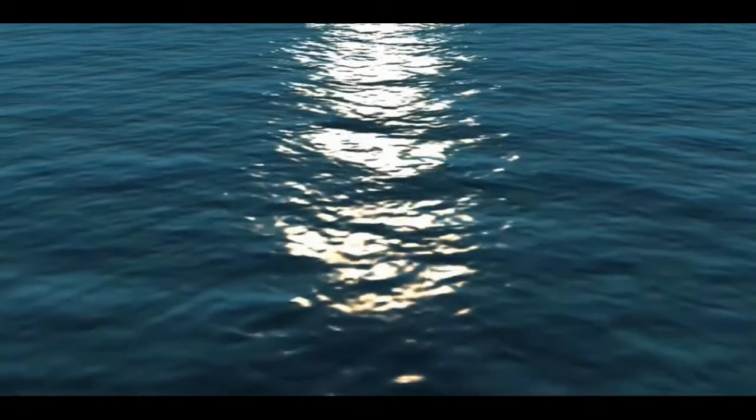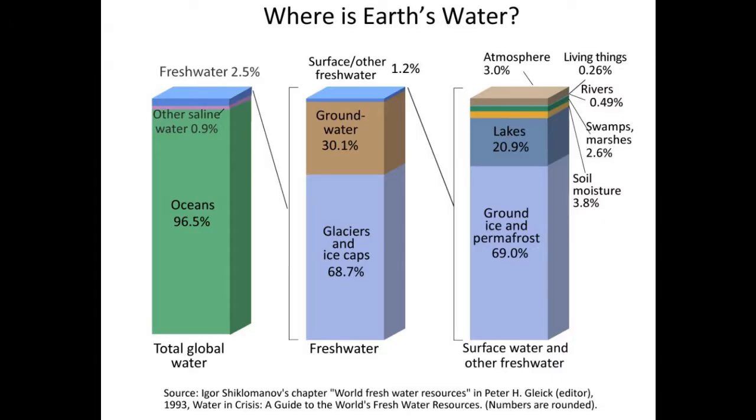The Earth holds over 332 million cubic miles of water. Of that, 96.5% is in the ocean. Another 1% is brackish, meaning it is also too salty to drink.